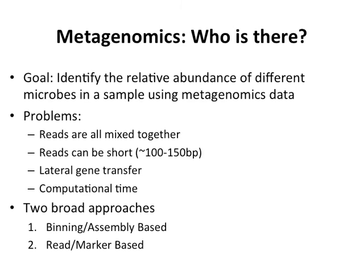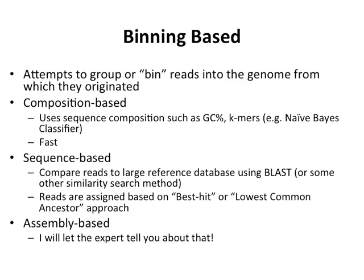There are two broad approaches. One is binning or assembly, where you use all your reads for taxonomic annotation — I'll defer completely to Frederick on that. The other is marker-based approaches, where you use particular markers within the dataset to figure out the taxonomic profile. From the binning-based side, there are composition-based methods using K-mers or GC content percentage and naive Bayes classifiers, which are fairly fast. There are also sequence-based methods like BLAST or similarity searches — common tools include Kraken — using best hit or lowest common ancestor. Assembly-based methods will be covered by Frederick.